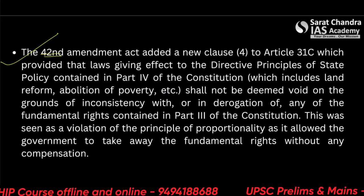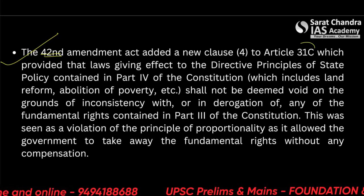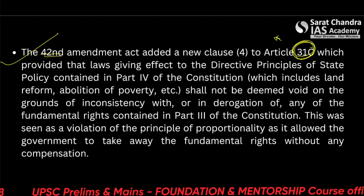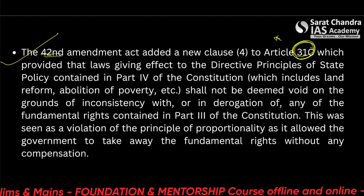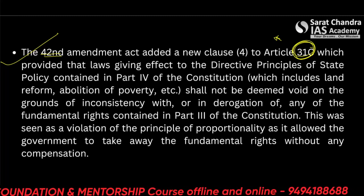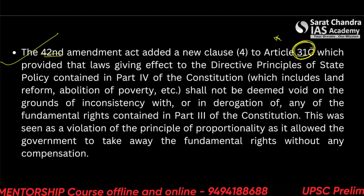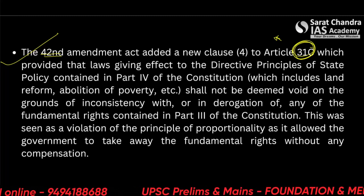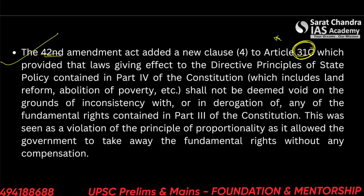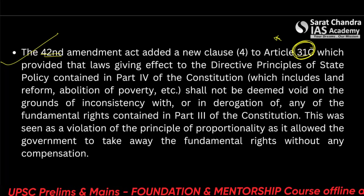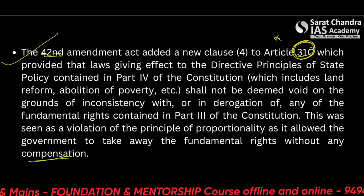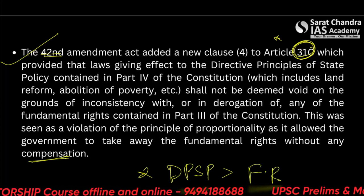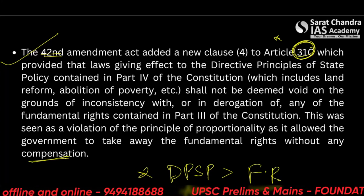These conflicting provisions led to the Minerva Mills case. The 42nd Amendment Act added a new clause 4 to Article 31C — remember this article, it is very important — which provided that laws giving effect to the Directive Principles of State Policy (DPSP) contained in Part 4 of the constitution, which includes land reforms and devolution of property, shall not be deemed void on the grounds of inconsistency with or in derogation of any of the fundamental rights contained in Part 3 of the constitution. This was seen as a violation of the principle of proportionality, as it allowed the government to take away fundamental rights without any compensation. Simply said, DPSP were kept over the fundamental rights — meaning that in view of DPSP, fundamental rights can be violated by the government.